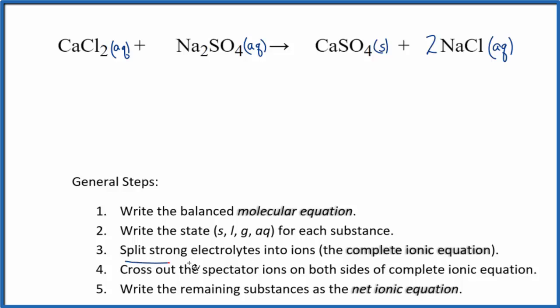Now we can split the strong electrolytes into ions. This will give us the complete ionic equation. Calcium is group 2 on the periodic table, 2+, chloride ion 1-. So we have Ca 2+. I won't write the states now. Let's do that at the end. And then 2 of the chloride ions, that's Cl-.